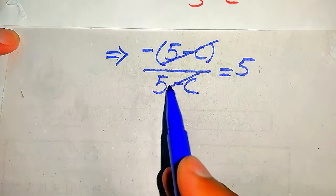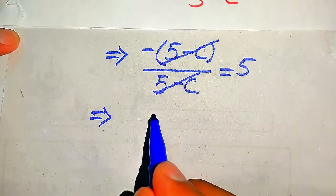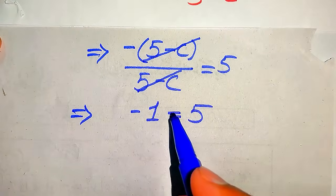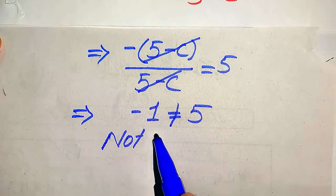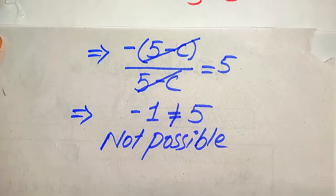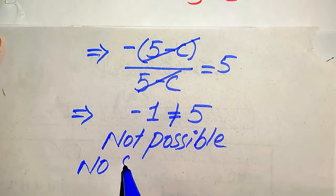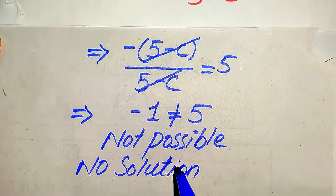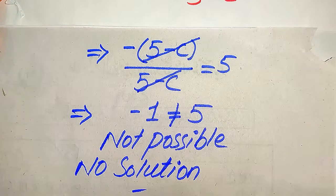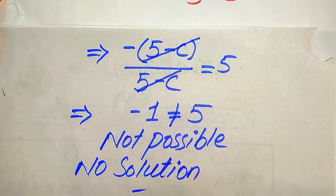The term 5 minus c in the numerator and denominator cancels out completely, giving us minus 1 equals 5. Since minus 1 is clearly not equal to 5, this is not a possible case. In the second method we cannot find any value of c, which confirms that this equation has no solution. Thank you so much for watching — please subscribe to my channel for more exciting videos.